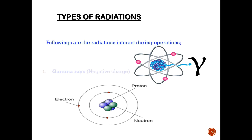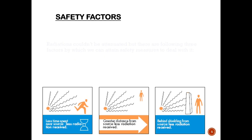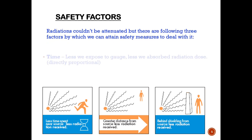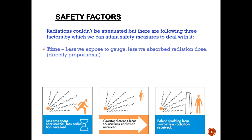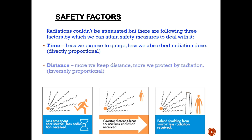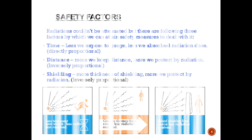There are two kinds of radiations which normally interact during operations: gamma rays, which are usually known as negatively charged, and neutron rays, which have no charge. There are three kinds of safety factors to deal with radiation. Time — the less we are exposed to the gauge, the less radiation we absorb. Distance — the more distance we keep, the more we are protected from radiation. Shielding — the more thickness of shielding, the more we protect from radiation.